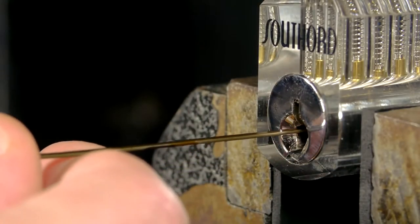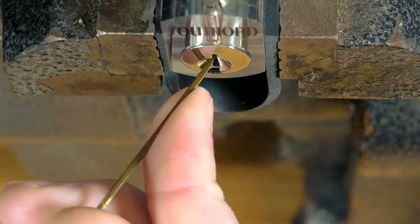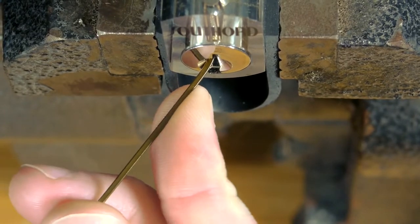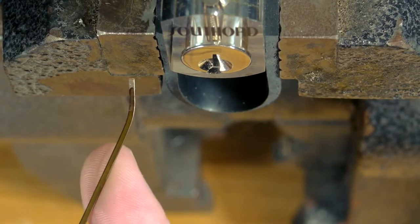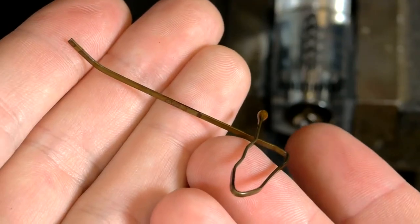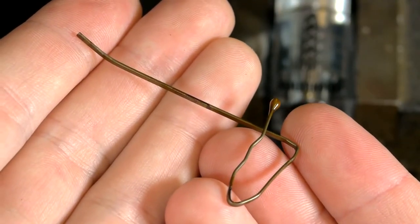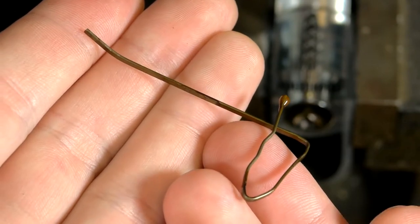The end of the pick now needs a slight bend, which can be done by pushing it into the lock itself and applying pressure like so. The last improvement that can be made is to bend the other half of the hairpin into a bit of a handle, which will make the pick a lot easier to control.